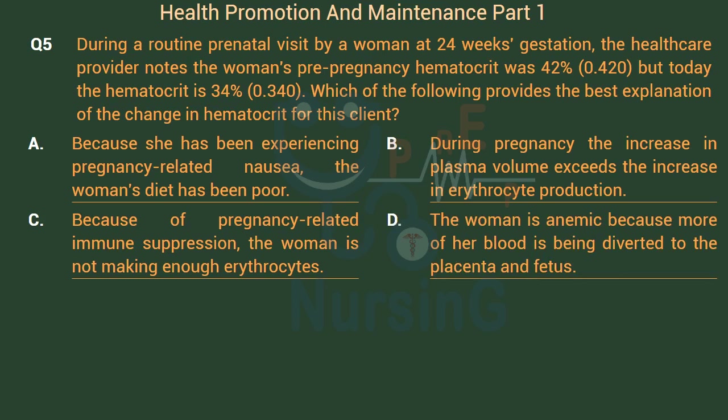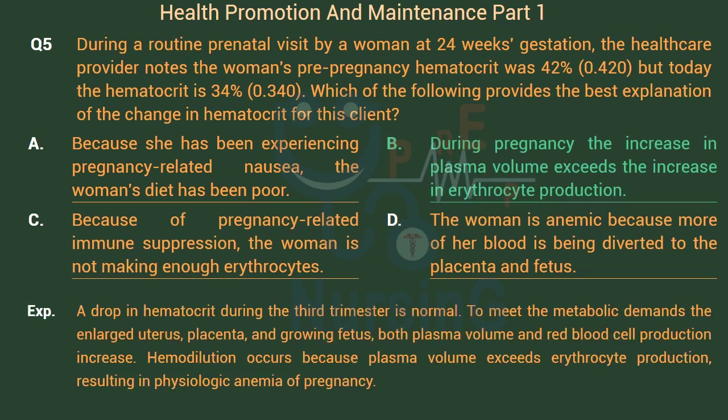The right answer is Option B: During pregnancy the increase in plasma volume exceeds the increase in erythrocyte production. A drop in hematocrit during the third trimester is normal. To meet the metabolic demands of the enlarged uterus, placenta, and growing fetus, both plasma volume and red blood cell production increase. Hemodilution occurs because plasma volume exceeds erythrocyte production, resulting in physiologic anemia of pregnancy.